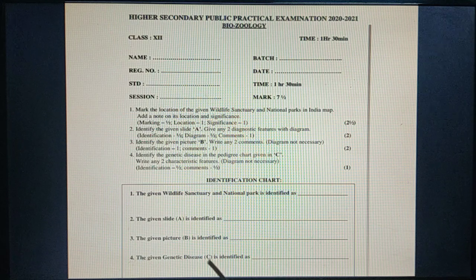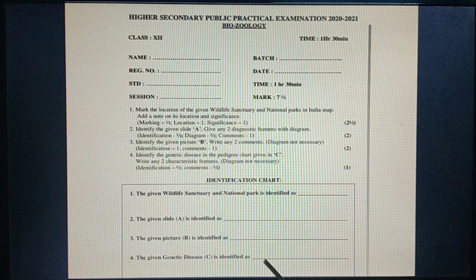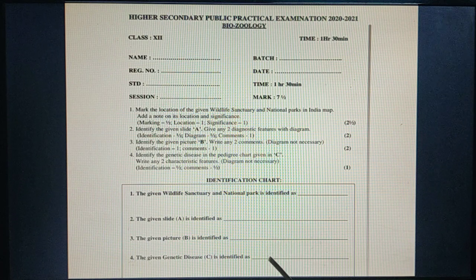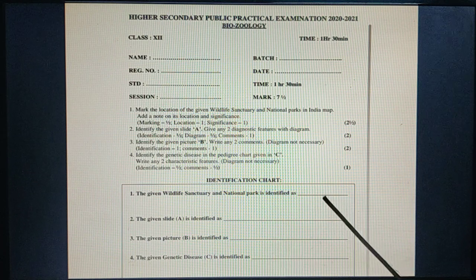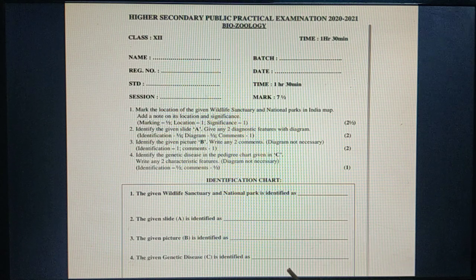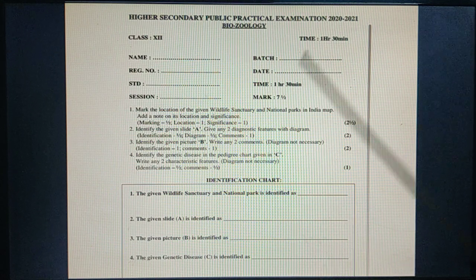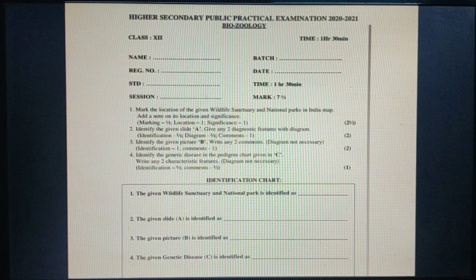Last question: the given genetic disease should be identified as either hemophilia or sickle cell anemia. You can write all four answers on the answer sheet, get the signature from the external examiner, then start writing the exam.